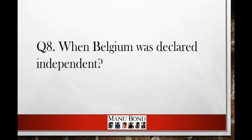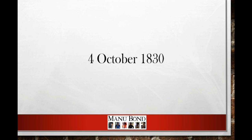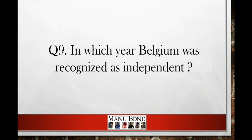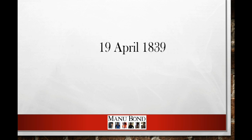Question number eight: when was Belgium declared independent? Answer: 4th October 1830. Question number nine: in which year was Belgium recognized as independent? Answer: 19th April 1839.